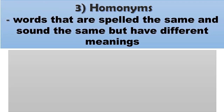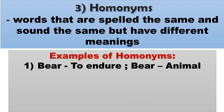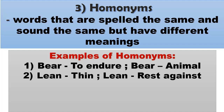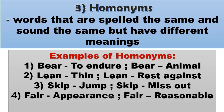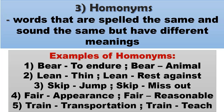Homonyms are words that are spelled the same and sound the same but have different meanings. Examples: 'bear' can mean to endure or it can be an animal. 'Lean' can mean thin or to rest against something. 'Skip' can mean to jump or to miss out. 'Fair' can refer to appearance or mean reasonable. Finally, 'train' may mean transportation or to teach.